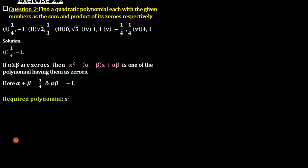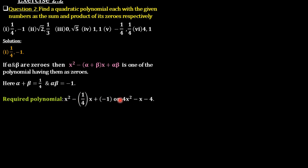The required polynomial is x² minus (1/4)x plus (negative 1), that is x² minus (1/4)x minus 1. On multiplying each term by 4, we get the form 4x² minus x minus 4.